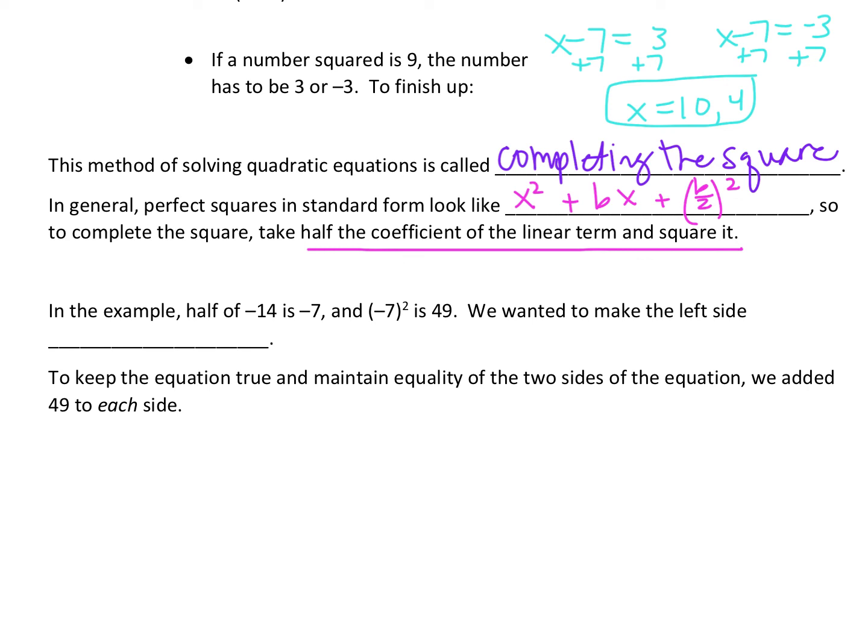In the example, half of negative 14 is negative 7, and negative 7 squared is 49. We wanted to make the left side x squared minus 14x plus 49. To keep the equation true and maintain equality of the two sides of the equation, we added 49 to each side. So we had to add in a 49 in the equation above to complete this square. If we're adding 49 to one side of the equal sign, that's why we added 49 to the other side as well.